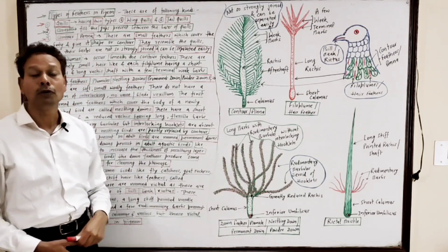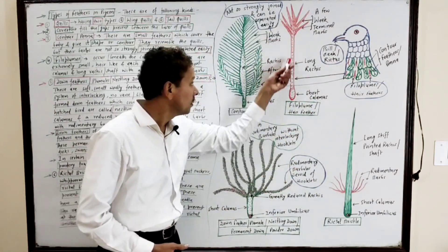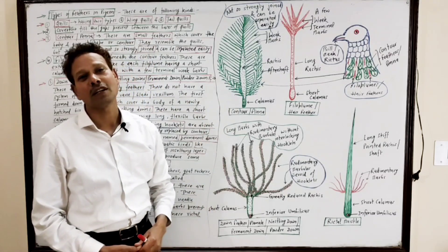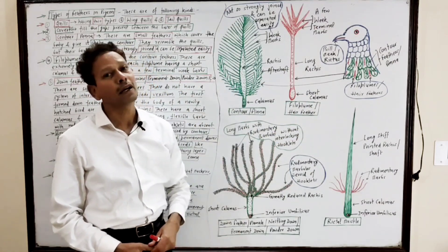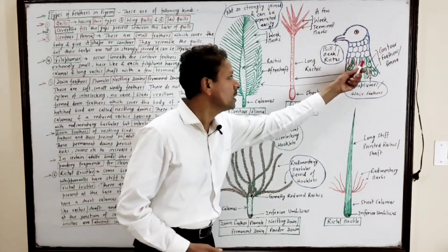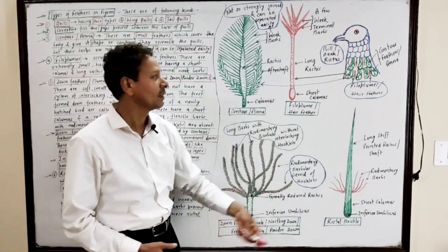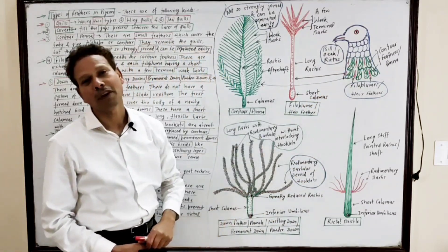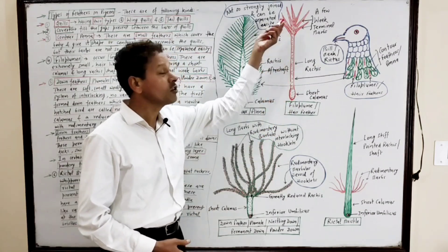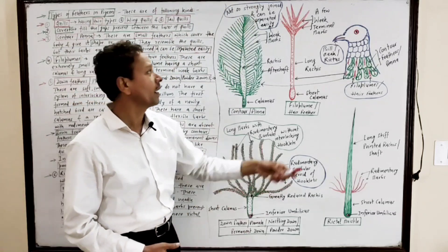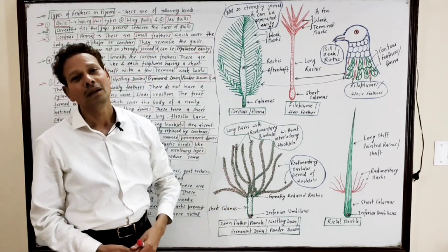The next type is filoplumes. This feather is a hair-like structure, so it is also named a hair feather. Filoplumes or hair feathers lie beneath the contour or pinna feathers. The calamus is short, the rachis is elongated and long, and at its terminal part it possesses a few weak terminal barbs.